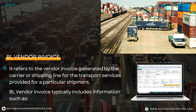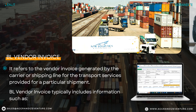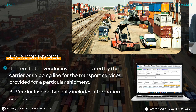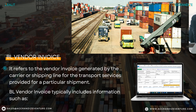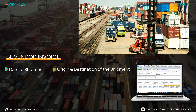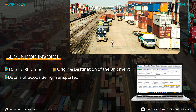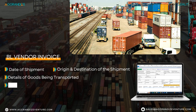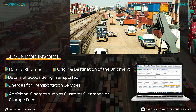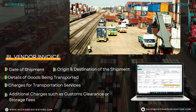The BL vendor invoice refers to the invoice generated by the carrier or shipping line for the transport services provided for a particular shipment. It typically includes information such as the date of the shipment, the origin and destination, the details of the goods being transported, the charges for the transportation services, and any additional charges such as customs clearance or storage fees.